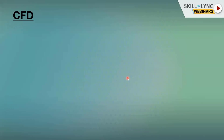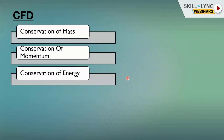CFD is a part of CAE where we use numerical methods and fluid dynamics — as the name suggests, Computational Fluid Dynamics. Fluid dynamics solved using computational methods is CFD. CFD has three pillars of conservation laws: conservation of mass, conservation of momentum, and conservation of energy. These are the basic pillars of CFD.